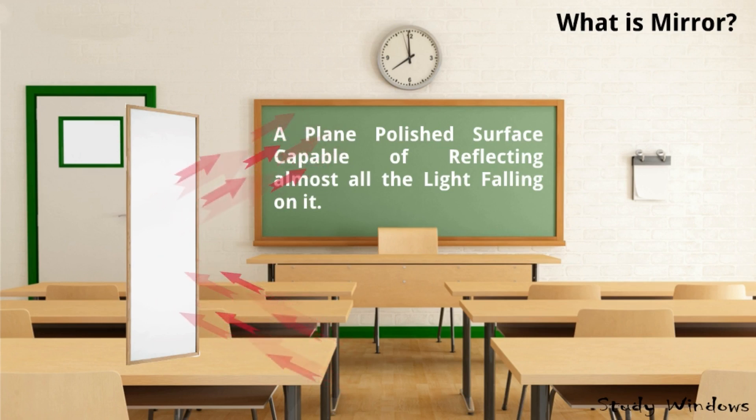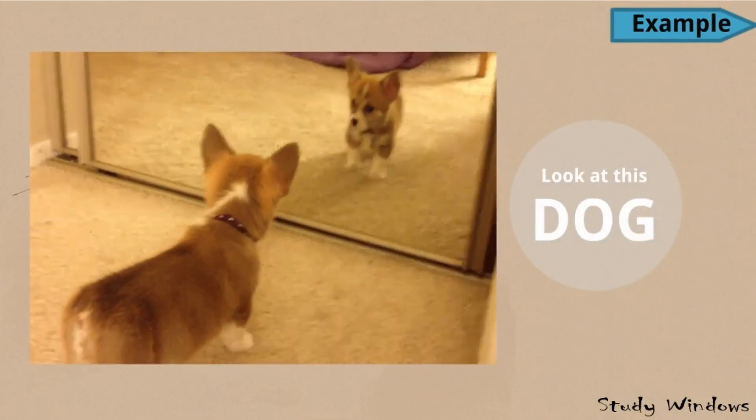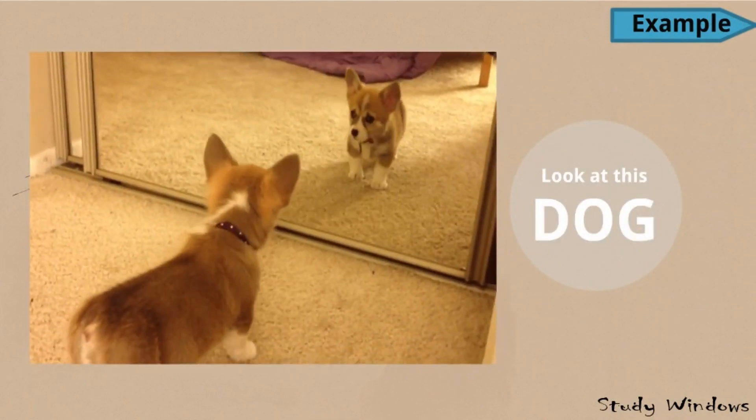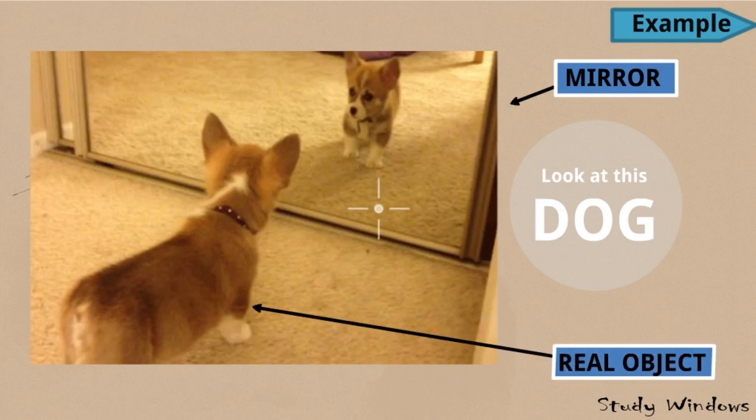Look at this image of a dog. The dog is scared because of its image. The polished glass portion is a mirror and this is the real object, that is the dog, and this is the image of the dog.